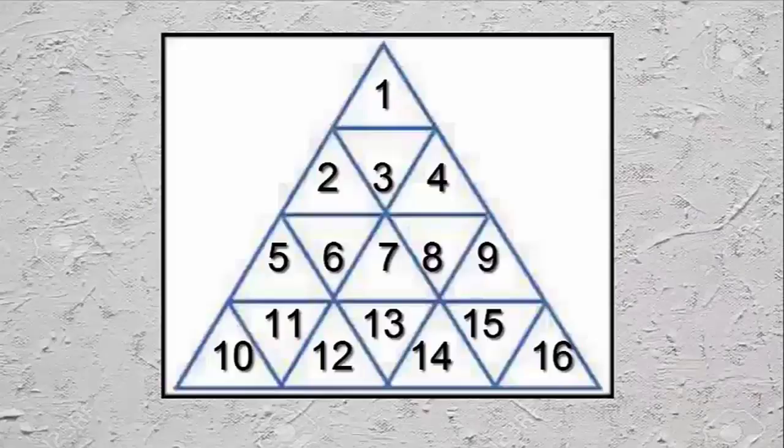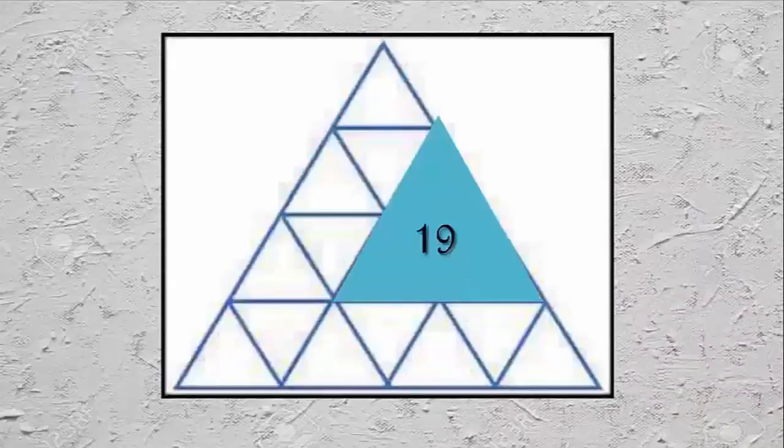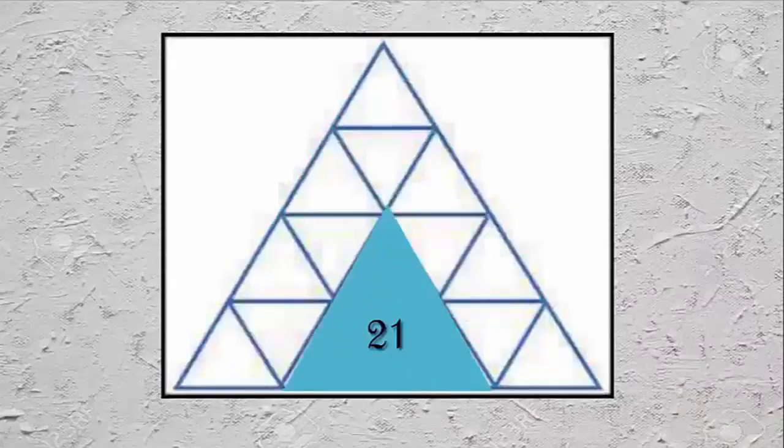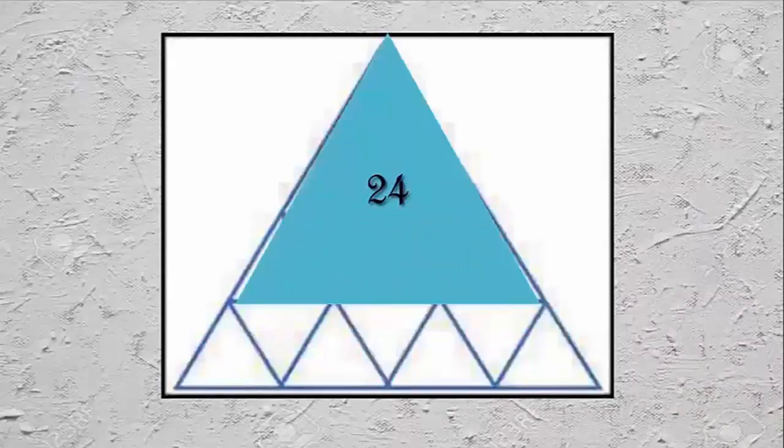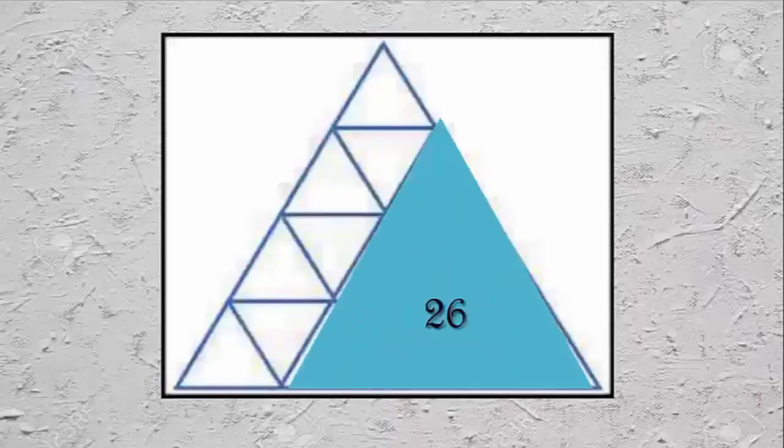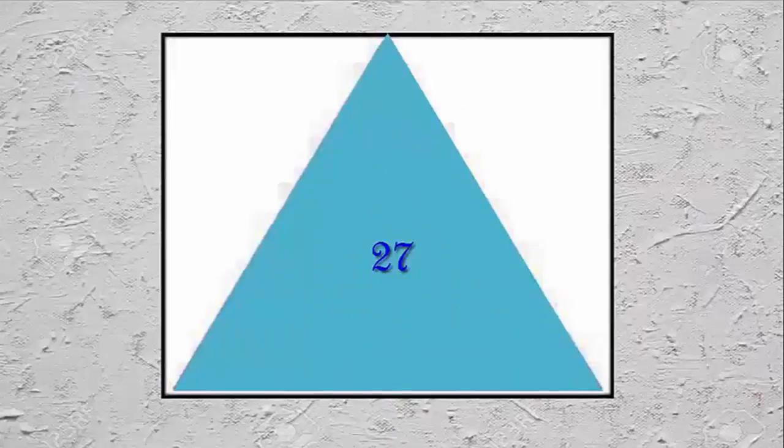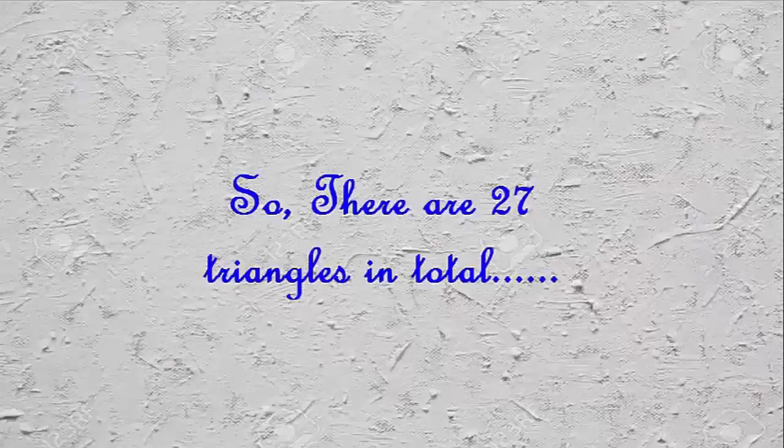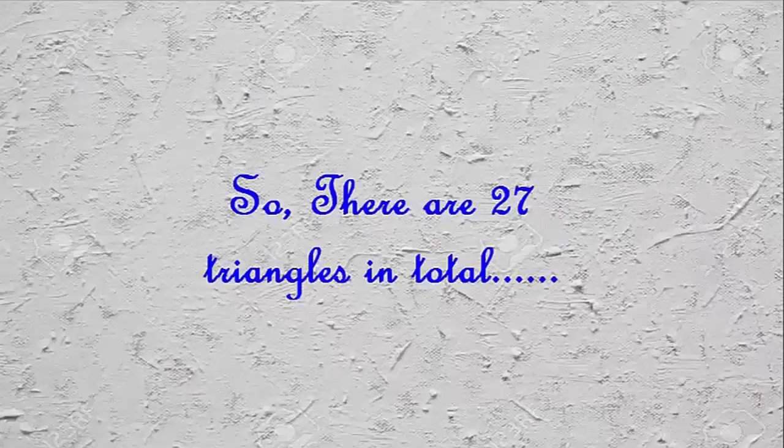Firstly, there are 16 one-cell triangles. Then there are 7 four-cell triangles, counting from 17 to 23. There are three 9-cell triangles, and as well 1 sixteen-cell triangle as a whole. So in total, there are 27 triangles.